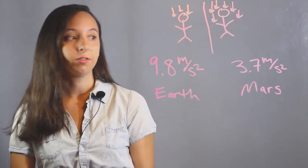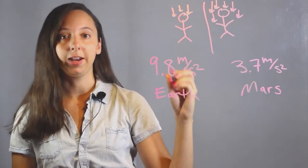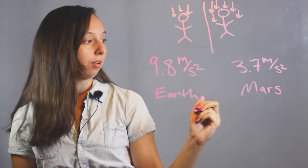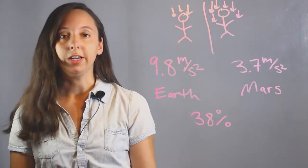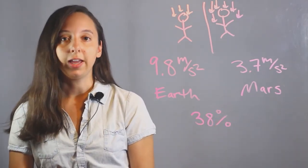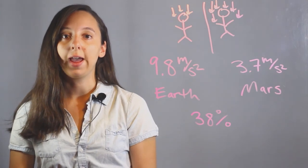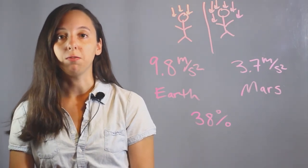And so if you divide 3.7 by 9.8, you can figure out that gravity on Mars is about 38% of what it is on Earth. So that means that anyone on Mars is going to weigh 38% of what they weigh on Earth.